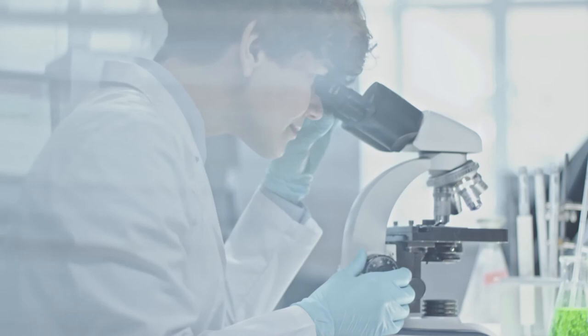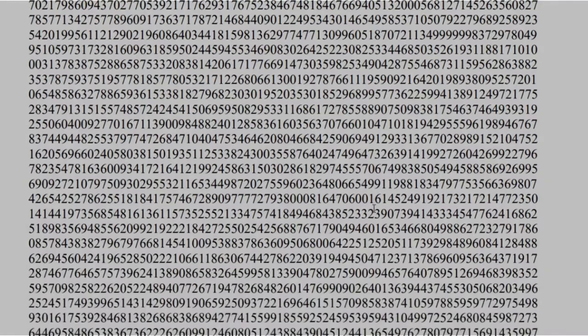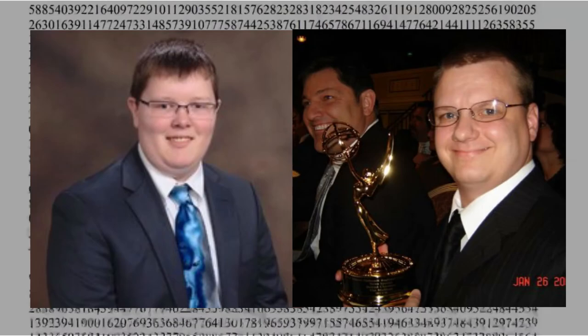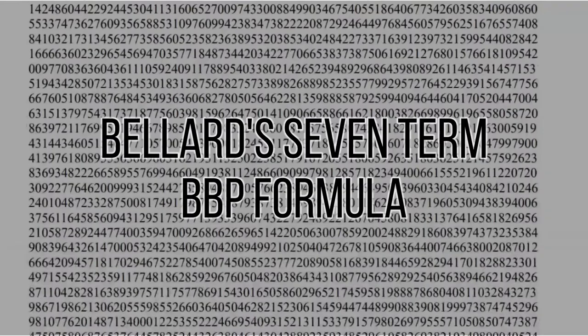Today's record for the number of decimal places of pi calculated is 5 times 10 to the power of 13 decimal places. This record was created by Timothy Mullican using a supercomputer and calculated in 303 days. The value was verified by using Bellard's seven-term BBP formula and it took 17 hours to verify.